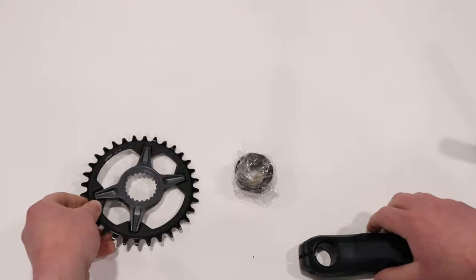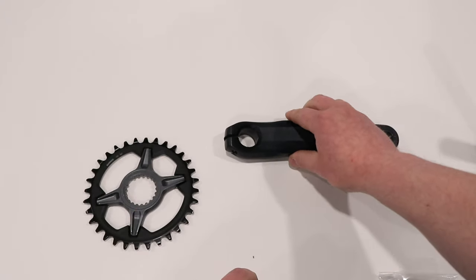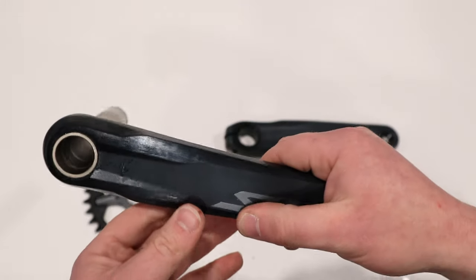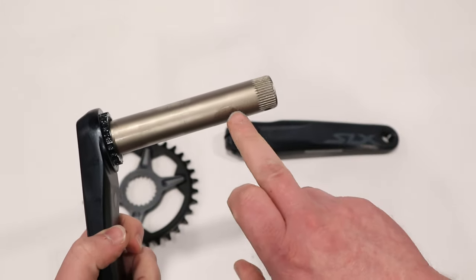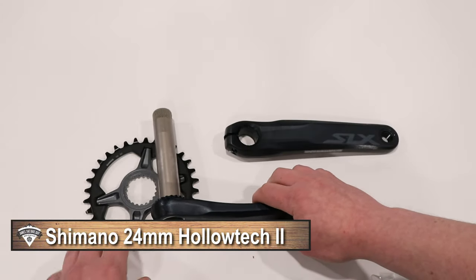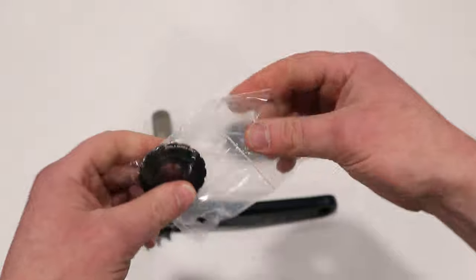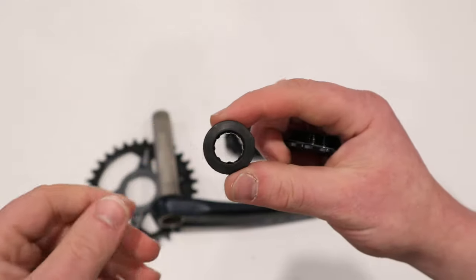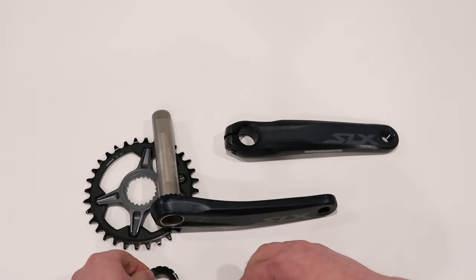So with it out of the package, you can see that this crankset is going to come in a few pieces. The crank arm, the drive side, is going to be attached to their 24mm Holotech 2 spindle. You're going to have a separate chainring, your lock nut for the chainring, as well as an adjusting nut to go on the end of the axle.